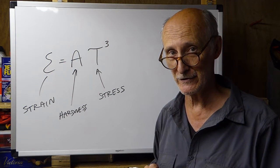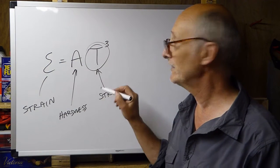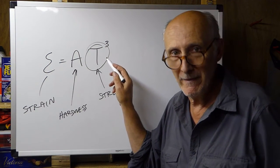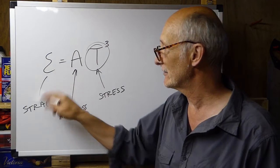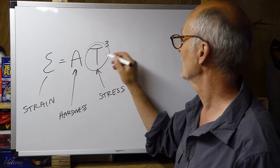Now, the shear stress equation follows directly on from that because this term here, the stress, what we wonder now is where does that come from? What makes that? Where does that come from? What are the components of stress? We're interested in the movement. We understand the hardness. What's this stress term?